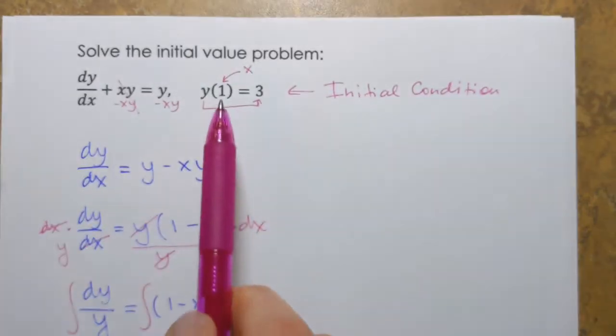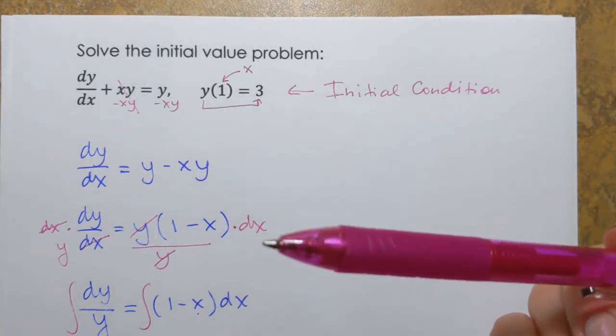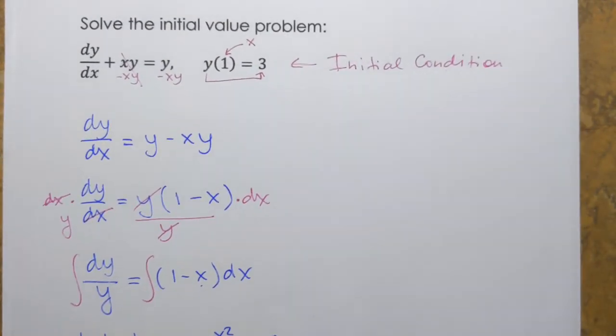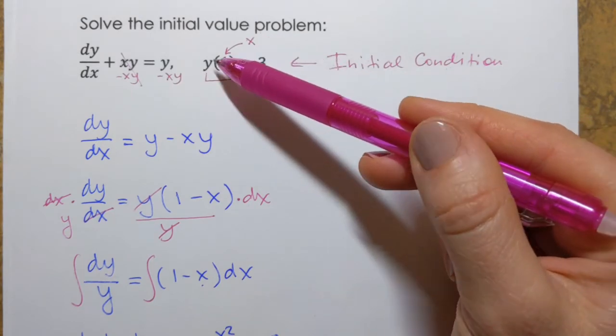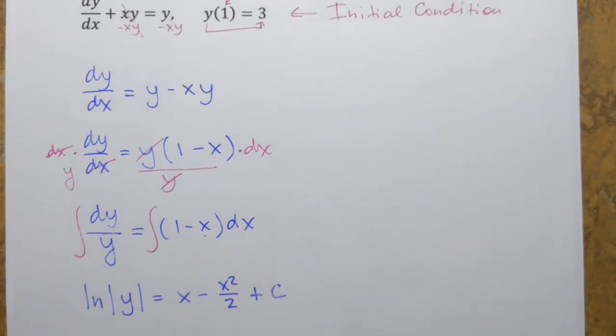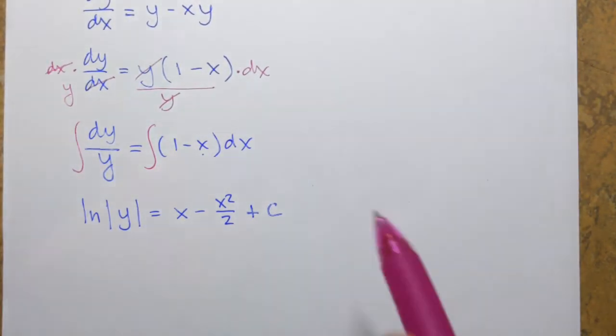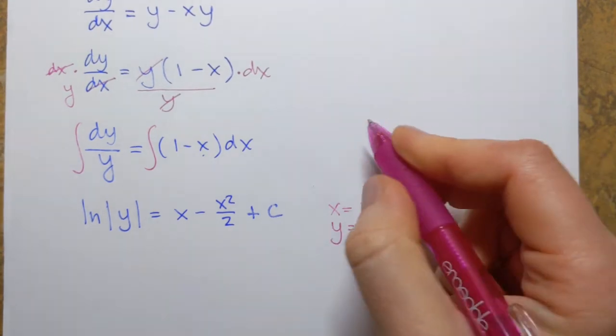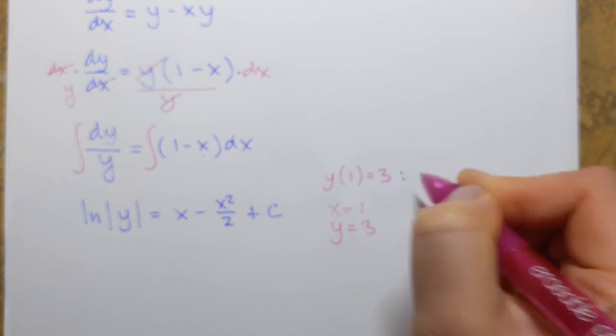And to find solution to this initial value problem, we need to find function from this family such that this function satisfies the following: when x equals 1, y equals 3. We'll literally have to plug that into our solution here. So when x equals 1, y equals 3. I got it from this initial condition. This is what it means.